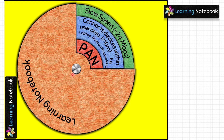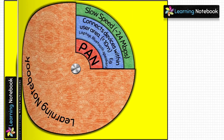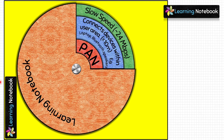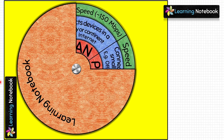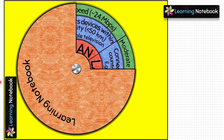To screw the nut and bolt, make a small hole in the center of all four circles as well as in the cardboard, then screw the nut and bolt through these holes. Now this working model to learn types of computer networks is ready — you can rotate these circles as shown here.